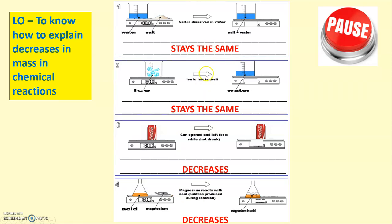To recap, the first two both stay the same because no gas is produced. The mass cannot escape. The second two, because there is a chance for gas being produced and to escape, they both decrease.